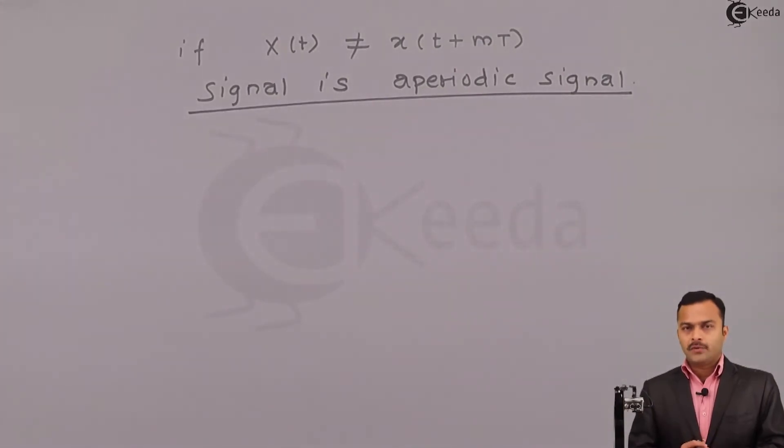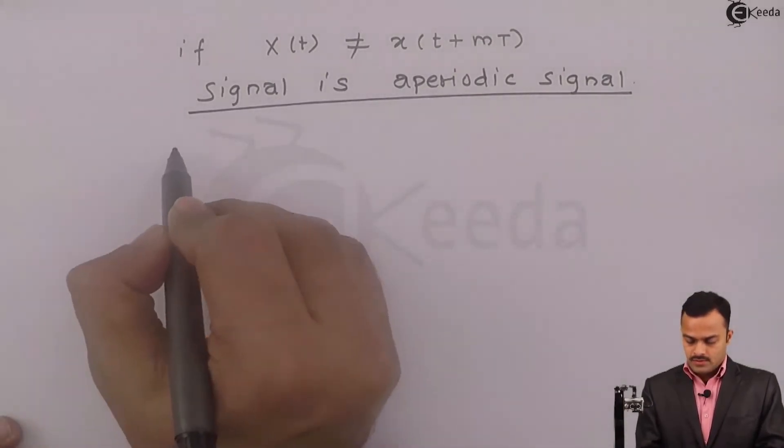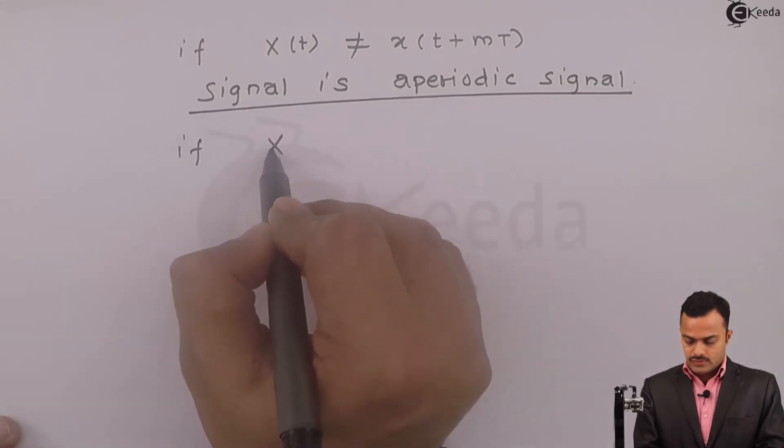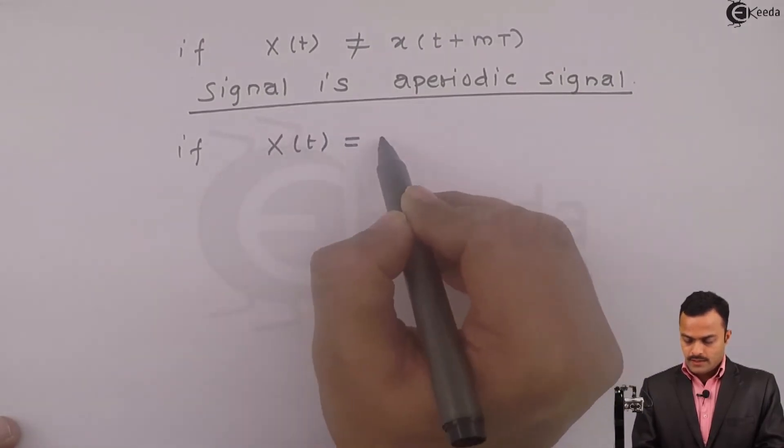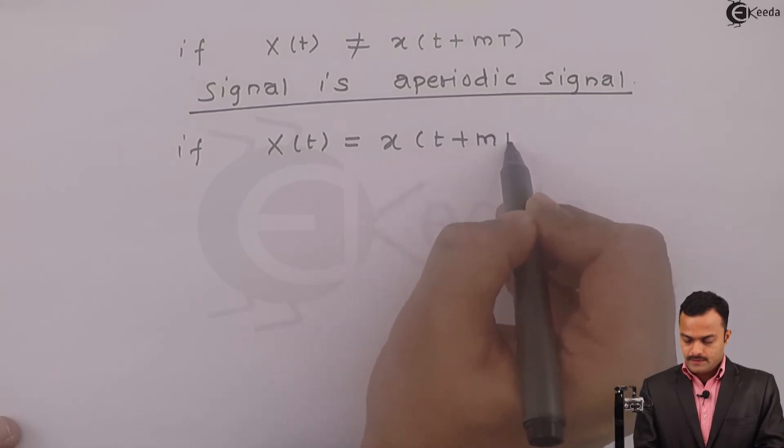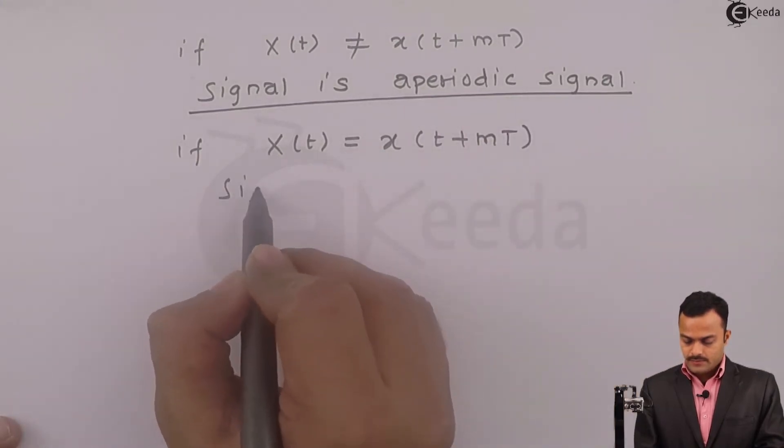Let's concentrate on periodic signal. So if x(t) equal to x(t plus mT), then signal is periodic.